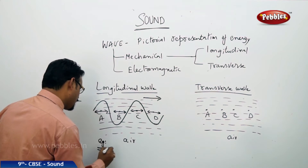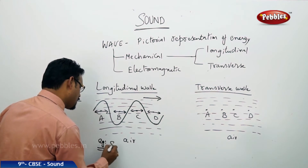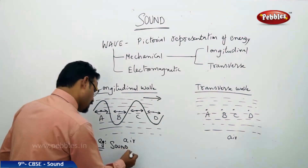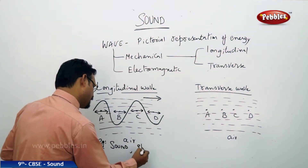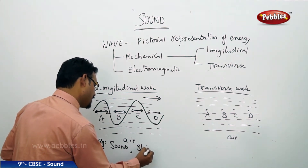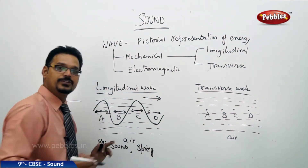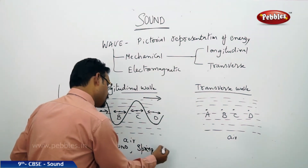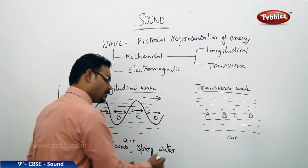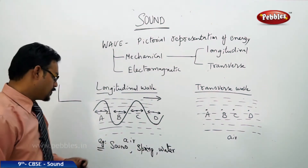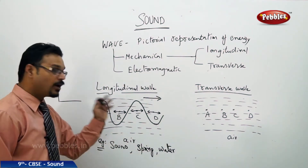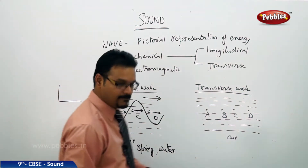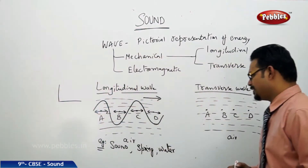Examples of longitudinal waves are: sound is a longitudinal wave, spring waves in a spring are also longitudinal, and you can produce longitudinal waves in water as well. So sound, springs, and water can all produce longitudinal waves.